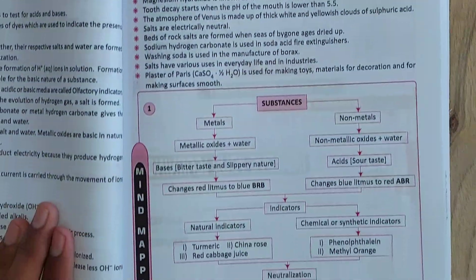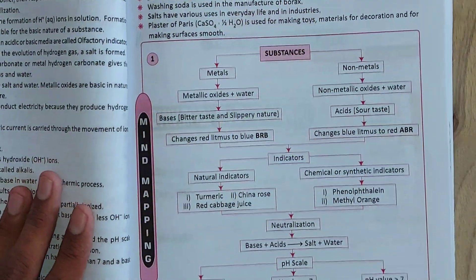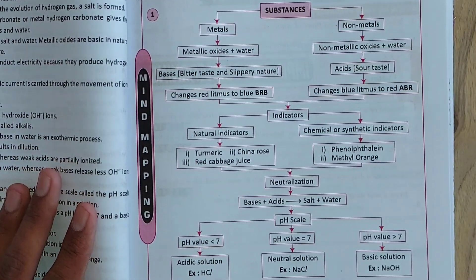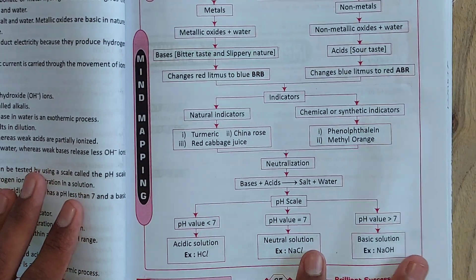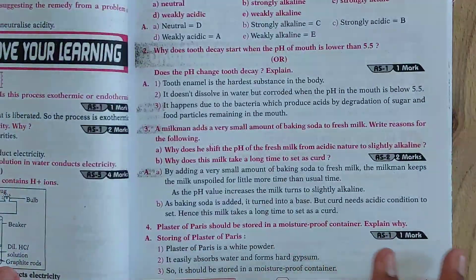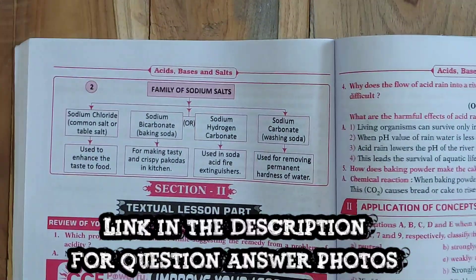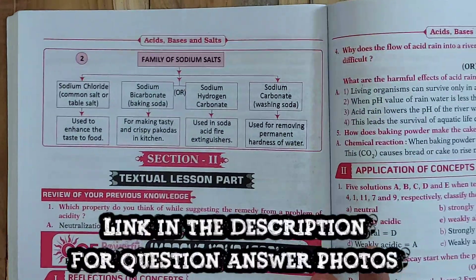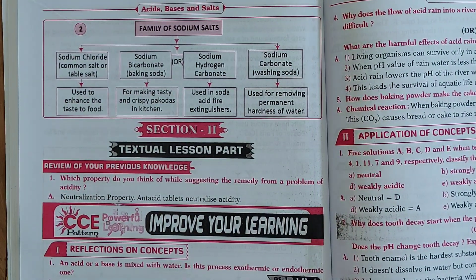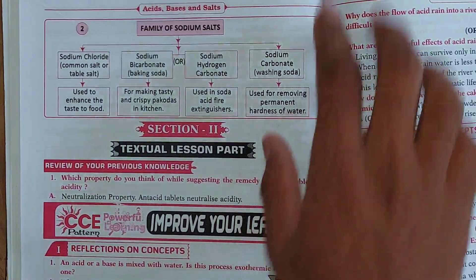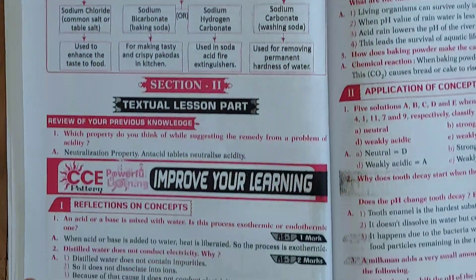Let's move to mind mapping. We have a total of two mind mappings — one on this page and a second one on the next page. If you want all this chapter's question answer photos, please check the description link. We have a link in the description for all chapter question answer photos. Here is mind mapping one and the second one — up to here we have.